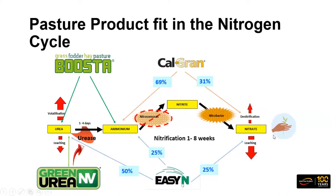If we're looking at supplying nitrogen in the nitrate form to get plant-available nitrogen into the system in cooler soil conditions, there are a couple of options. One is Cal-Gran, a blend of calcium ammonium nitrate and ammonium sulphate — a third of that nitrogen is in the nitrate form. Or we could look at EasyN, where a quarter of the nitrogen is in the nitrate form compared to the other 75% in ammonium and urea form. We'll also talk about green urea and pasture boosters.